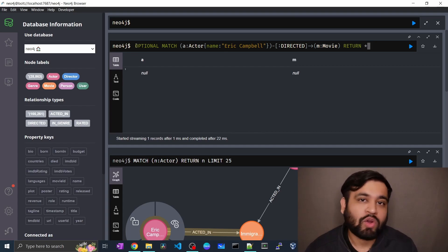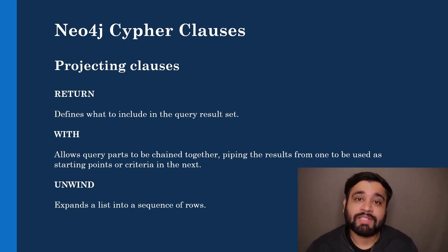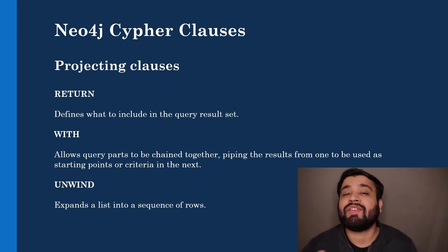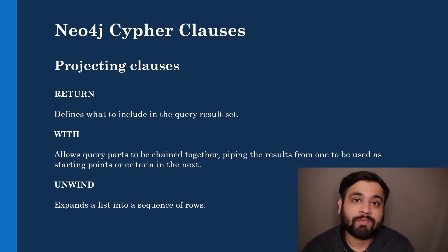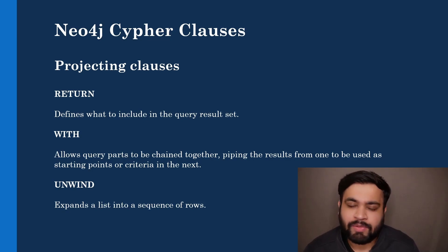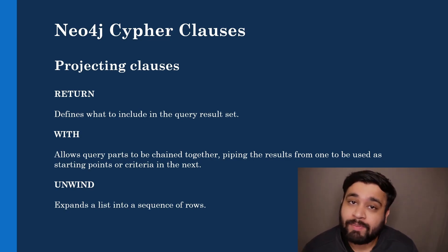This is all about reading clauses. Let's talk about the projecting clauses now. Projecting clauses help you project your graph and define how your output will really look — you can get tabular output as well as graphical output. Graphical output returns nodes and relationships, while tabular output gives you all the properties present in a node or relationship. The first projecting clause is RETURN, which defines what to include in the query's result set — either tabular form or a set of nodes and relationships.